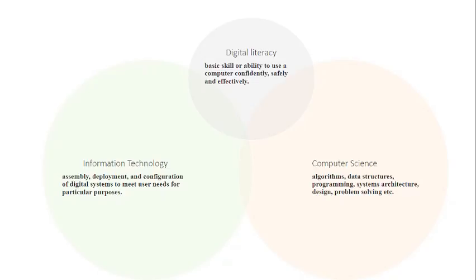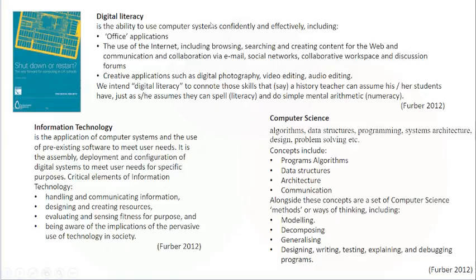So what do these areas actually mean? Digital literacy is your basic ability to use a computer — your basic office applications, your ability to write an email, use the internet, do an appropriate search. The analogy they use is being able to spell, to write, to use basic maths — things you use across the curriculum, not just in English and maths. These are basic fundamental skills.